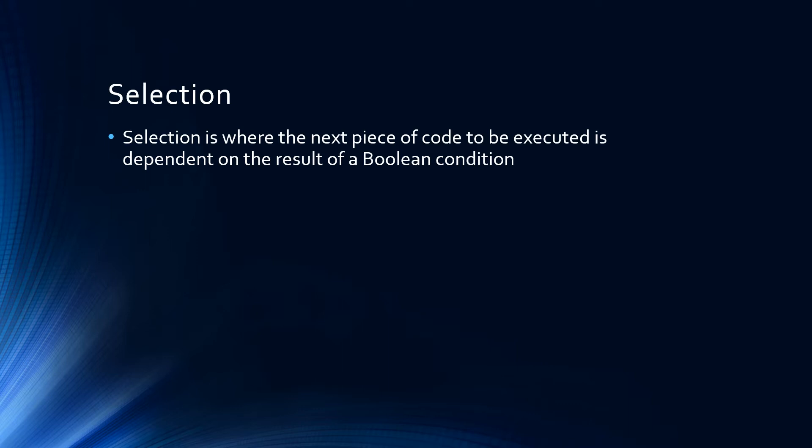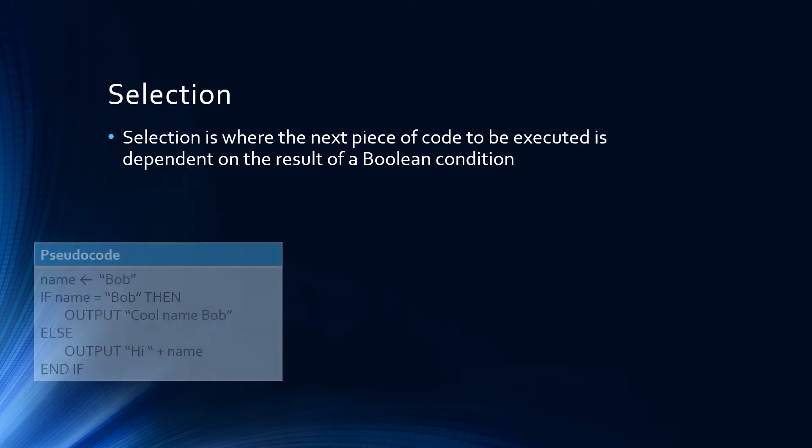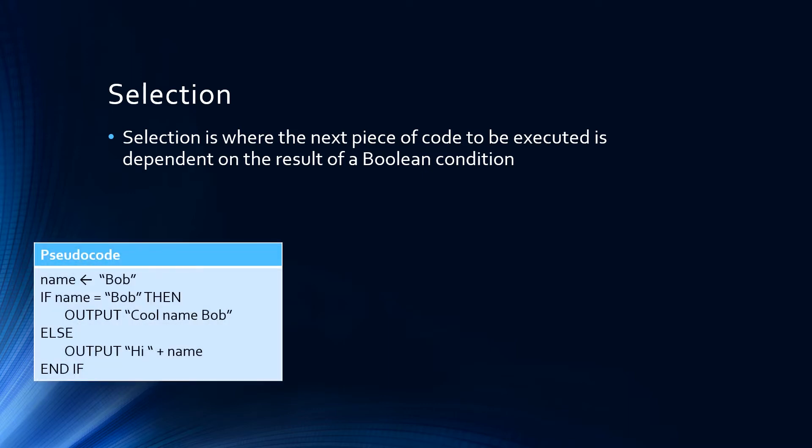Selection is where the next piece of code to be executed is dependent on the result of a boolean condition. Like in our example code here, where what's stored in the variable name determines what kind of output is produced. As we have already seen, we use an arrow for assignment in pseudocode. This means the equal sign can be used for checks of equivalence. Notice the format of the if statement in pseudocode. The use of the word then to surround the condition and make it stand out.